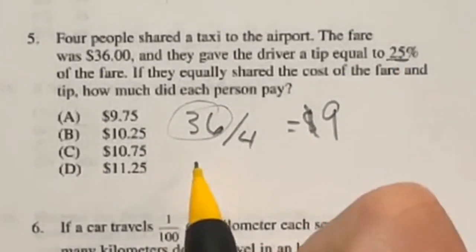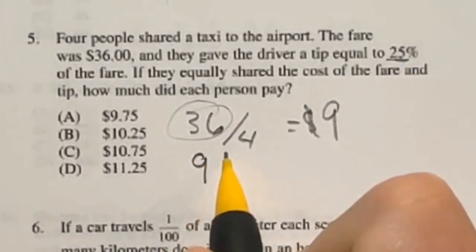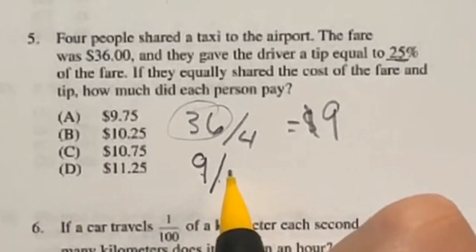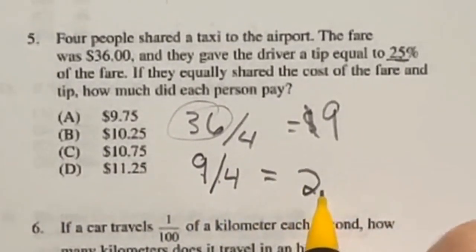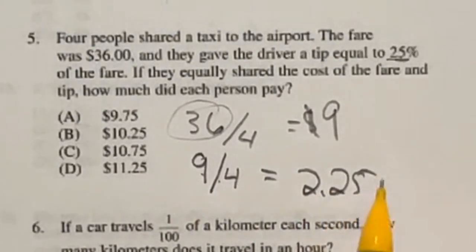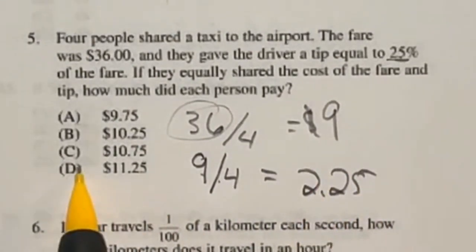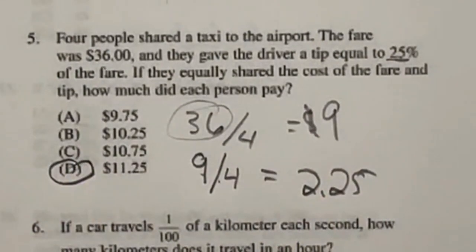Well, we already know that 36 divided by four is $9, so they're tipping $9, but we need to divide that tip between all four of them as well, which is going to give me $2.25. Now, if that's the case, add these two together to see that they're going to be paying a total of $11.25 each.